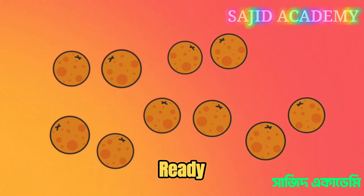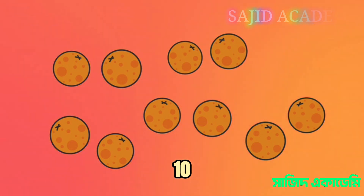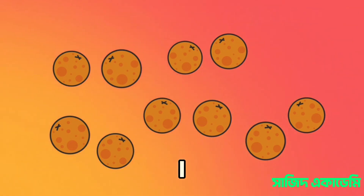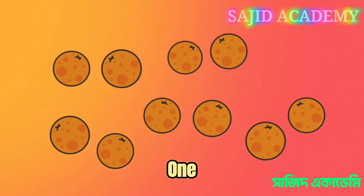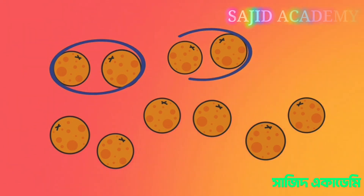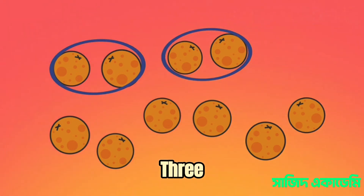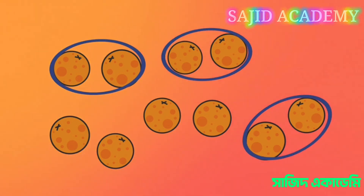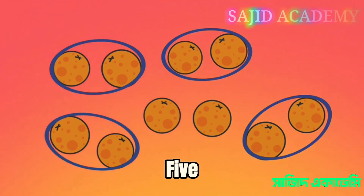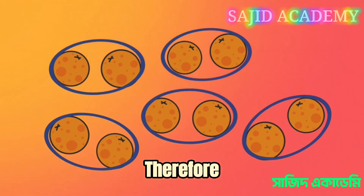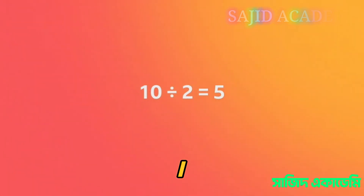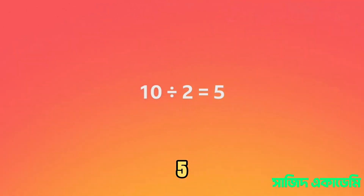Ready? There are 10 oranges altogether. I found 1, 2, 3, 4, 5 groups of 2. Therefore 10 divided by 2 equals 5.